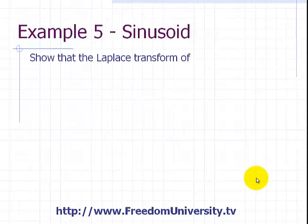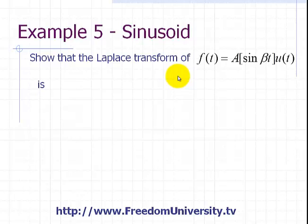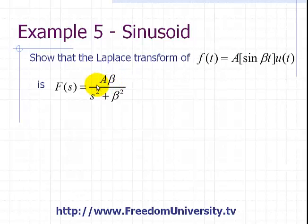So here we have a sinusoid. We want to show that the Laplace transform of f(t) = a·sin(βt)·u(t), where u(t) shows causality of the sine function, has a Laplace transform F(s) equal to a times beta divided by s squared plus beta squared, where beta is the radian frequency of the sine function.